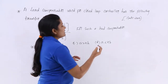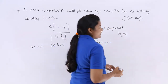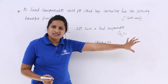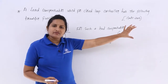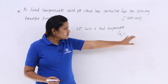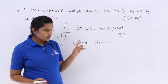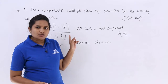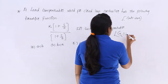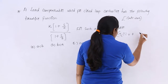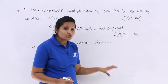Here, GC of S is the transfer function of the system where we use the compensator. GC of S is your transfer function. When they say this is a lead compensator, the phase of this transfer function should be positive.